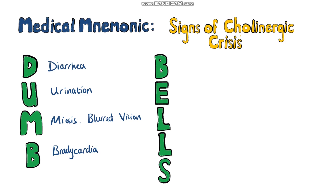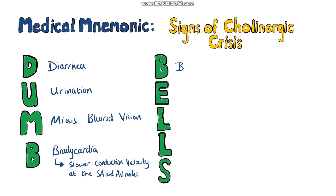Next, we have the two B's, which are bradycardia, due to the slowing of the conduction velocity at the sinoatrial and the atrioventricular nodes, and bronchospasm, due to contraction of smooth muscle in the airways as a result of the cholinergic signalling.